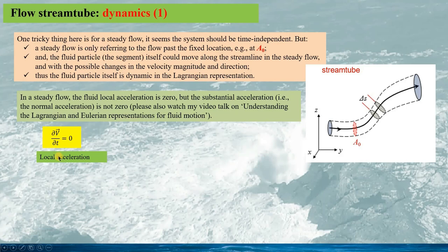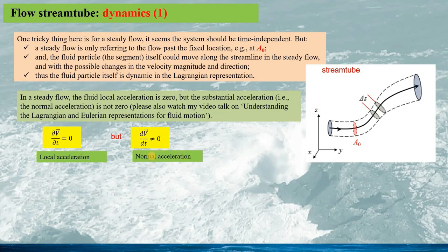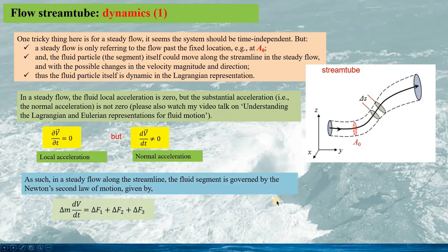So for the steady flow, the local acceleration given by the partial differentiation of the velocity vector with regard to time is zero, but the normal acceleration — also called the substantial acceleration in many textbooks — is not zero. In this regard, in a steady flow along the streamline, the motion of the fluid segment is governed by Newton's second law: the mass of the segment times the acceleration of the segment equals the total force acting on the segment, delta F1 plus delta F2 plus delta F3, all of which we have obtained in the previous two slides.